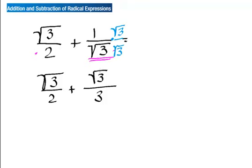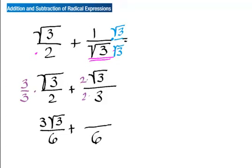Now I can find a common denominator between 2 and 3, which is 6. I multiply the first fraction top and bottom by 3 to get 3√3 over 6, and multiply the second fraction top and bottom by 2 to get 2√3 over 6. When I add fractions I keep the same denominator of 6 and add the tops: 3√3 plus 2√3 makes 5√3, so the answer is 5√3 over 6. That's how you add fractions when you have radicals — it's kind of tricky and takes some practice.